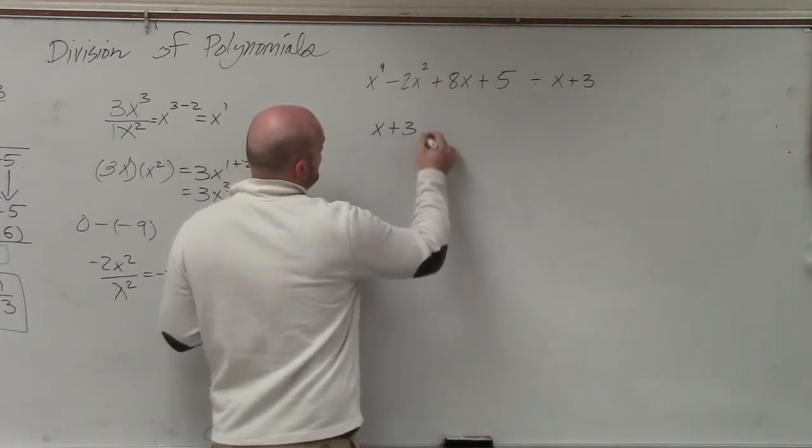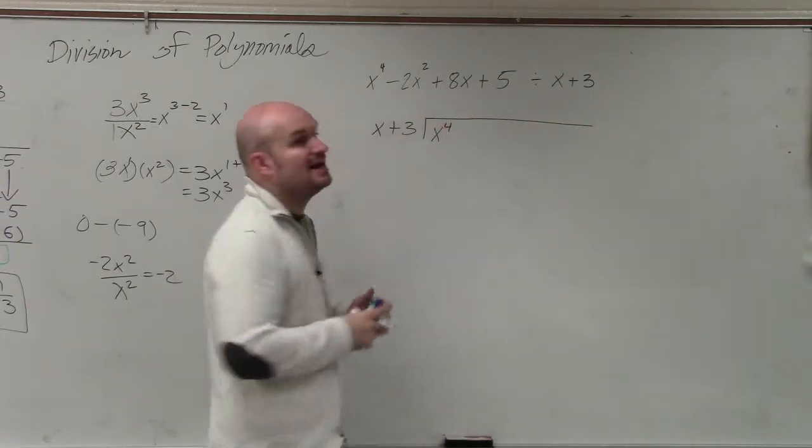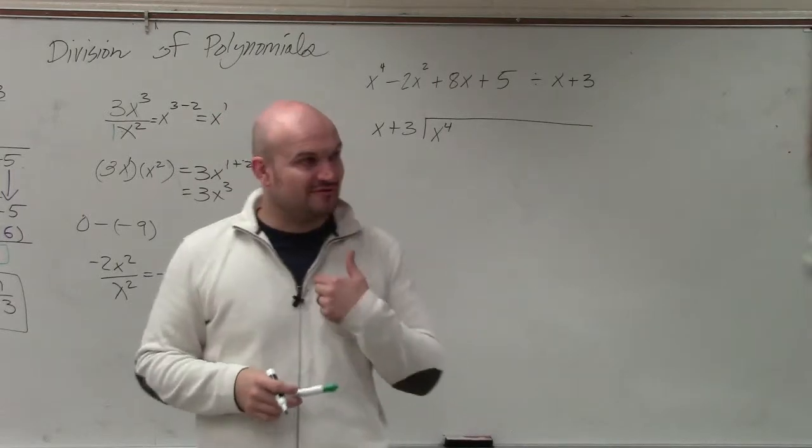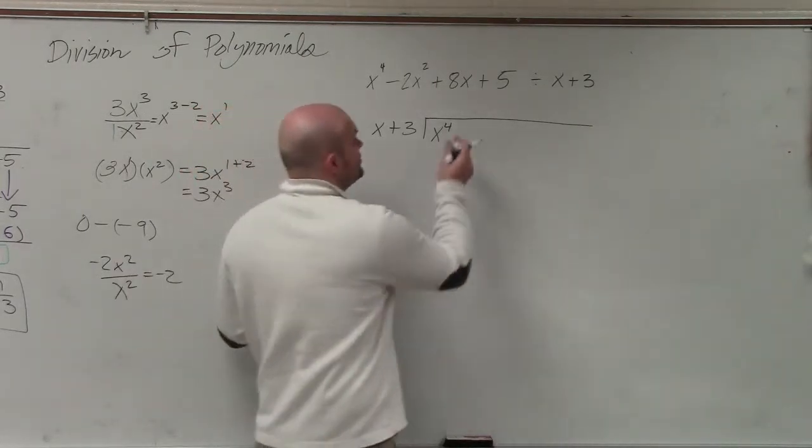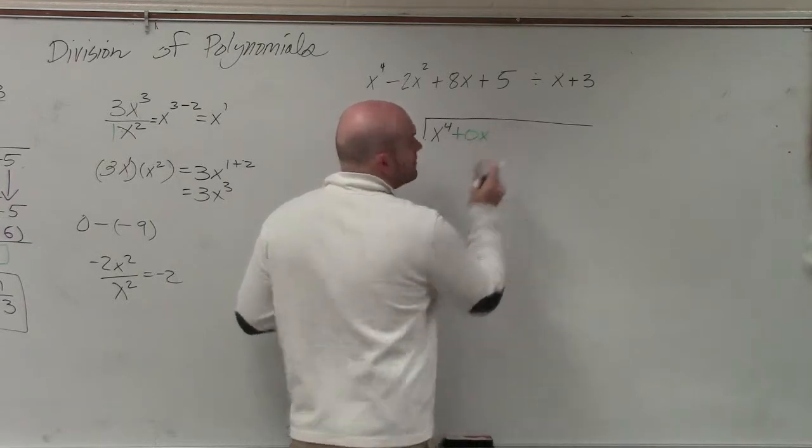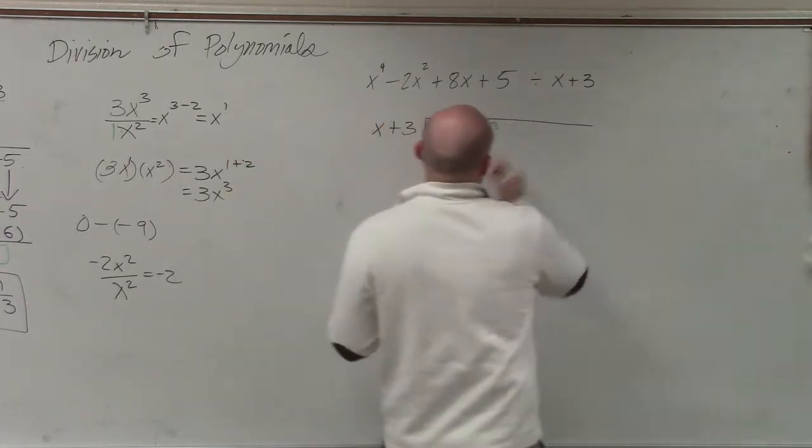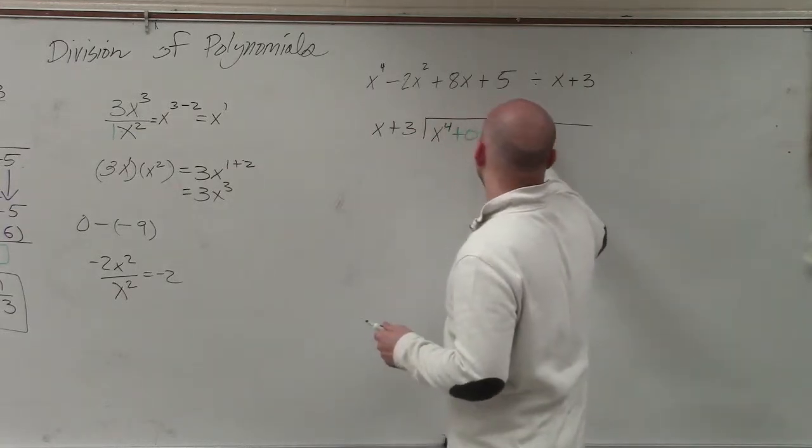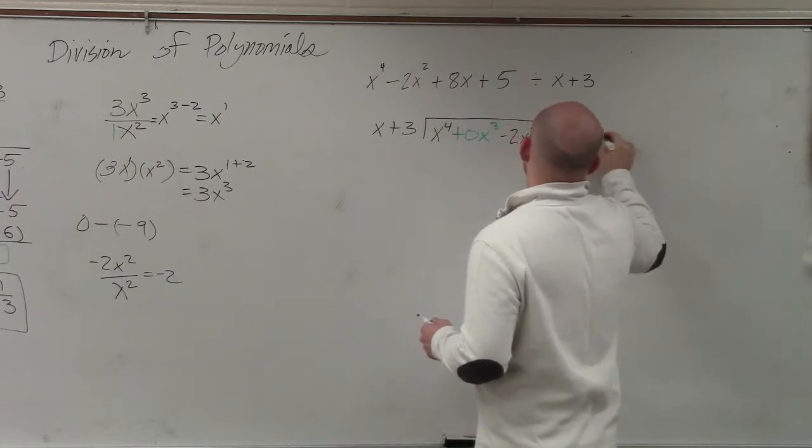So I have x plus 3 divides into x to the fourth. I do not have an x cubed, right? So I am going to use a spacer of 0x cubed. Then I have minus 2x squared plus 8x plus 5.